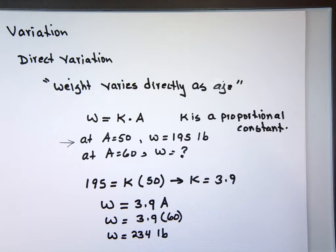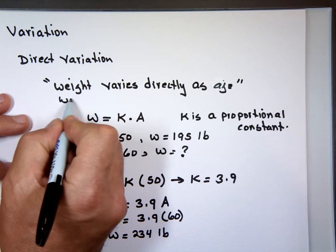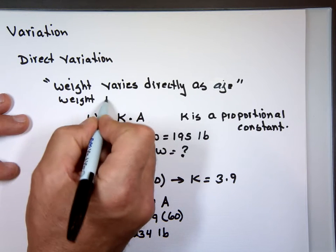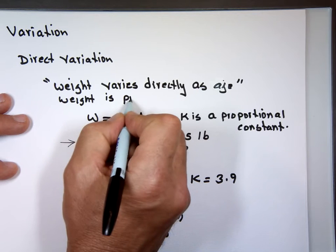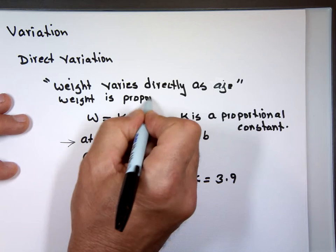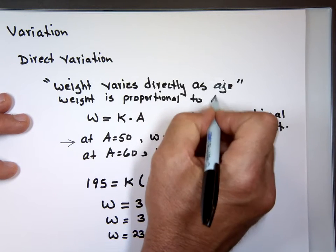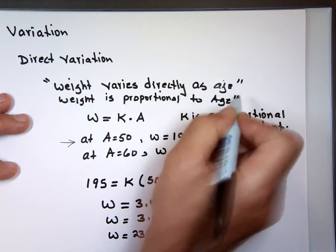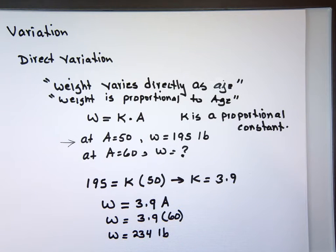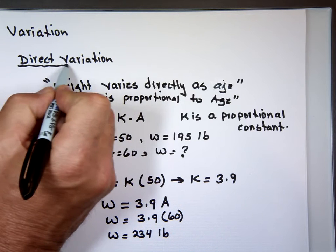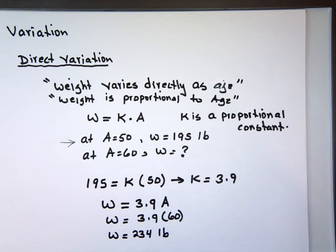Sometimes they say is proportional to instead of just varies directly. You might hear it is proportional - my weight is proportional to my age. That's the same as saying varies directly, two ways of saying it. That's the direct variation. The other variation is called inverse variation.